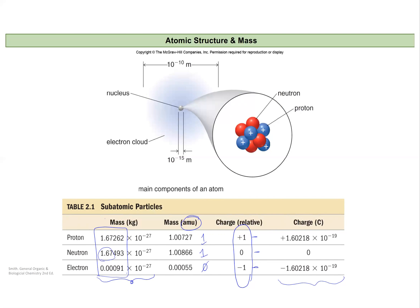The overall volume of the atom is on the order of 10 to the negative 10 meters. The actual nucleus is even smaller, on the order of 10 to the negative 15 meters — that's an extra five zeros. This demonstrates the great difference in size between the electron cloud that defines the volume of the atom and the nucleus, just as there is a great difference in mass between the proton or neutron and the electron.